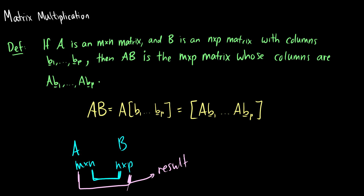What we can see here is that little formula. If we have a matrix A times a matrix B, we turn B into its column vectors, and then we distribute the matrix A to each of the column vectors — b1 all the way through bp — and then we end up with just a bunch of multiplication inside the matrix.